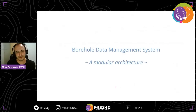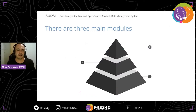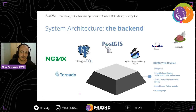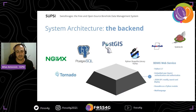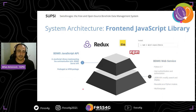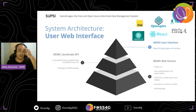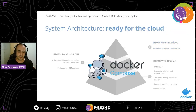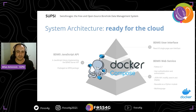The software architecture has three layers. At the bottom, we have the backend, which is a web service written in Python and handles several well-known open source projects. In the middle, we developed a JavaScript API that exposes all communication with the web service. And at the top, we implemented the web interface. All modules are dockerized and can be deployed easily in the cloud on any Docker-compatible environment using docker-compose.